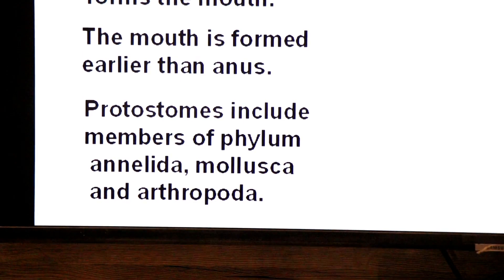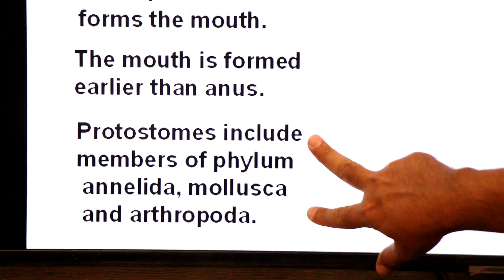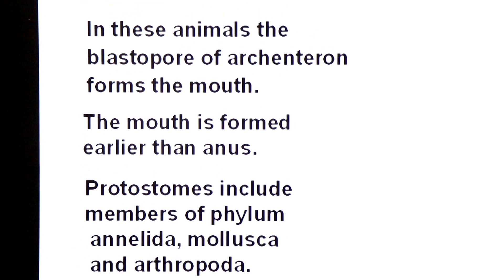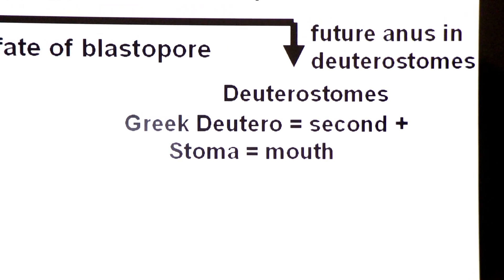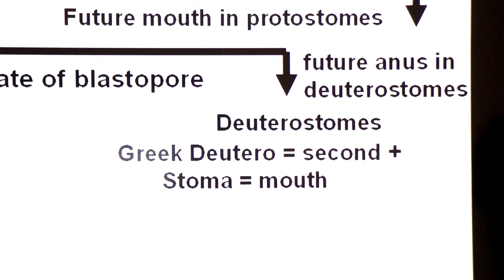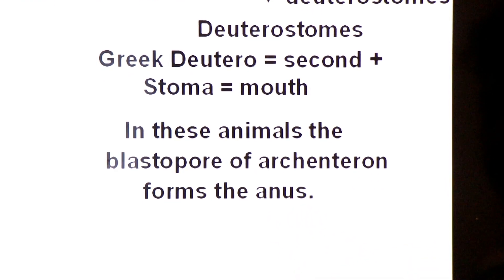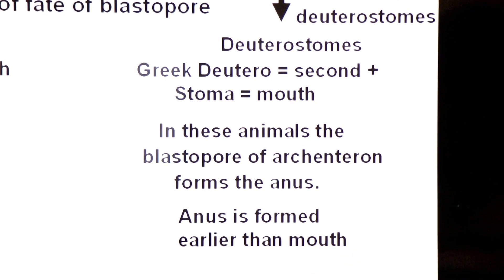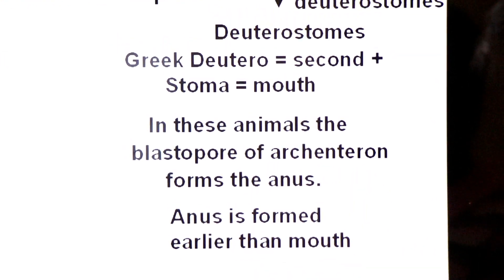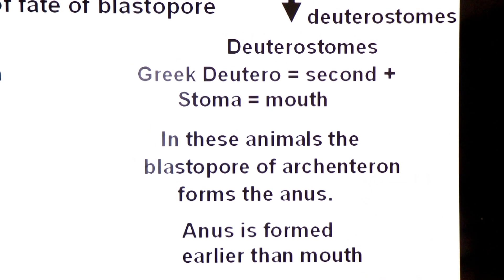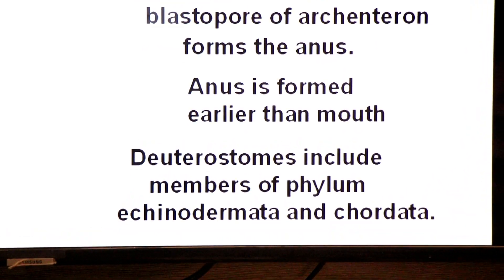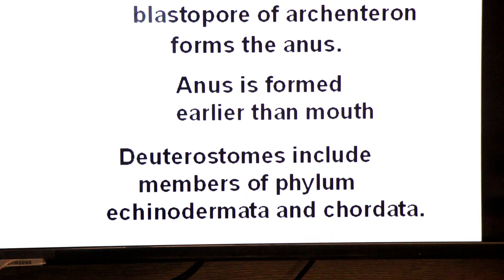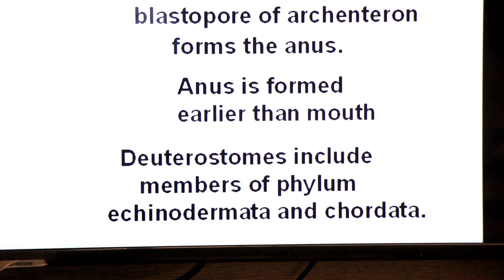Three phyla are placed in Protostomes: Annelida, Mollusca, and Arthropoda. Now we define Deuterostomes. It comes from the Greek word 'deutero' meaning second and 'stoma' meaning mouth. In these animals, the blastopore forms the anus. The anus is formed earlier than the mouth — the first opening from the blastopore in Deuterostomes is the anus, and the mouth is formed later. Deuterostomes include members of Phylum Echinodermata and Chordata.